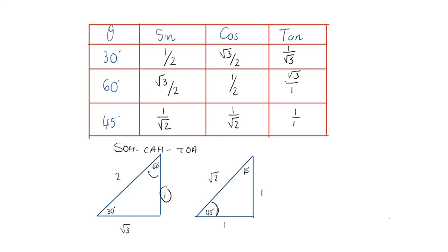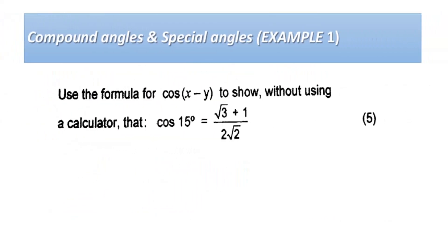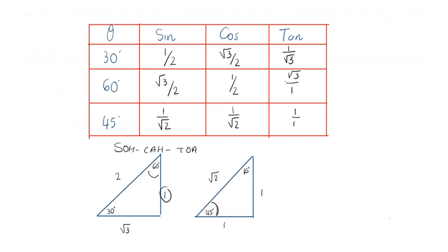So I've shown you how to define your trig ratios in terms of your special angles. Please make sure you remember how I got this table — it will be important in your exams, especially when working with compound angles. For example, if you're given cosine of 15°, without knowing special angles it will be very hard to prove the right-hand side. Copy down this table and remember how we obtained all these values.